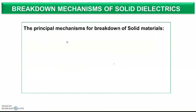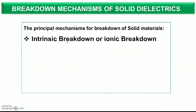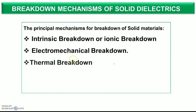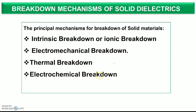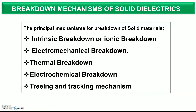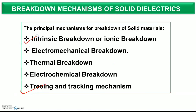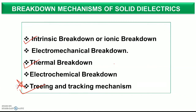The different principal breakdown mechanisms of solid materials are: first, intrinsic breakdown or ionic breakdown; second, electromechanical breakdown; third, thermal breakdown; fourth, electrochemical breakdown; and last but not least, breakdown due to treeing and tracking. Among these, from an examination perspective, treeing and tracking mechanism is the most important. We will generally study intrinsic or ionic breakdown, thermal breakdown, and breakdown due to treeing and tracking in solid dielectric materials.